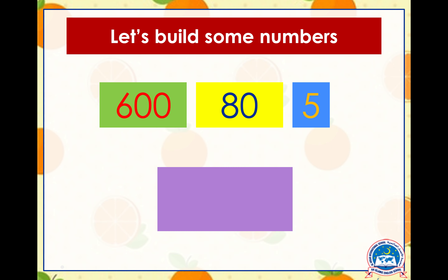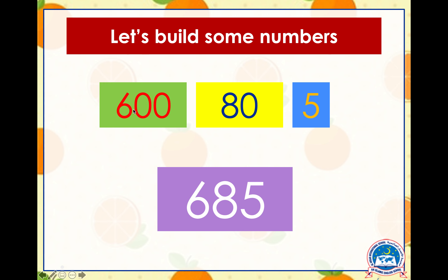Let's build some numbers. Here we have six hundred, eighty, and five. If we join all these numbers together it becomes six hundred and eighty-five. What we do when building these numbers is we remove the zeros, unless the ones unit is zero or there are zero tens.